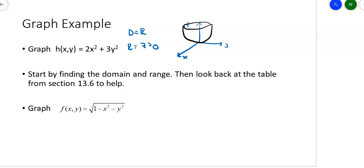Take a look at this one. f of xy equals the square root of 1 minus x squared minus y squared. What's the domain? What's under this radical has to be at least zero. So 1 minus x squared minus y squared has to be greater than or equal to zero. Move things around, I get negative x squared minus y squared greater than or equal to negative 1. Divide through by negative 1, remember when you divide by a negative it changes the sign.